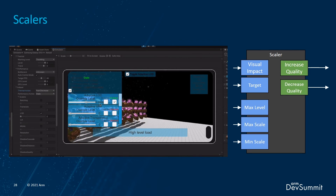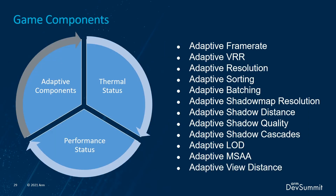Currently we have several scalers available, each accompanied by a separate sample: adaptive frame rate to control frame rate automatically; adaptive resolution for changes of screen resolution; different adaptive shadow scalers such as shadow map resolution, shadow distance, shadow quality, or shadow cascades; adaptive LOD, which will change the LOD distance; and adaptive view distance, which lowers the view distance when fewer resources are available and increases it when there is plenty of processing power. There can be any amount of scalers active at the same time, and adaptive performance will constantly regulate them to adapt content quality based on thermal performance. You can easily create your own scalers — there is no limit to what can be scaled.